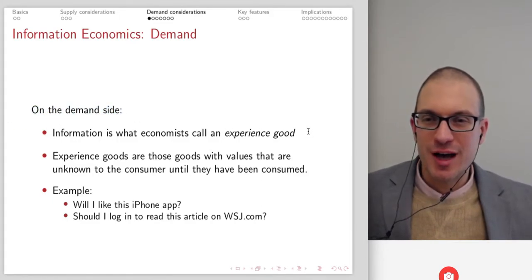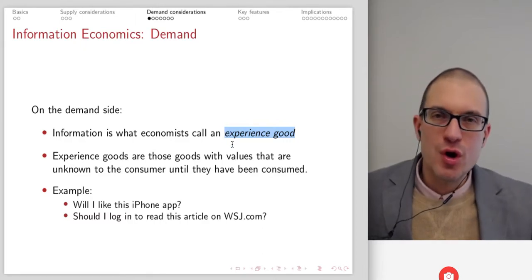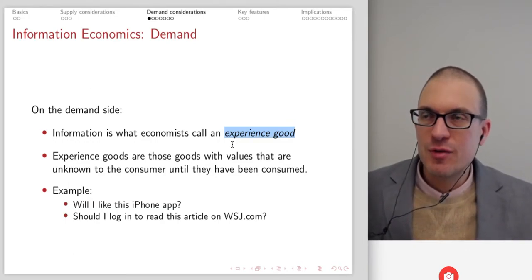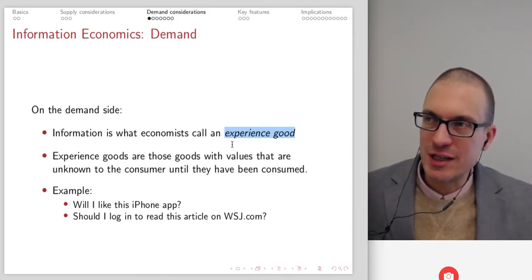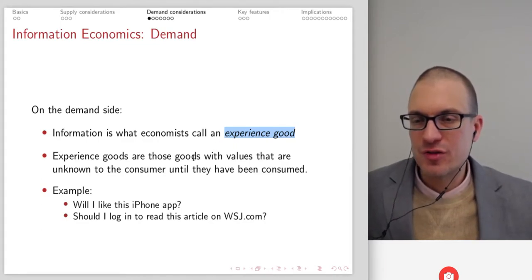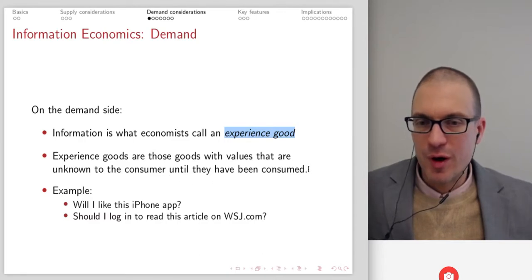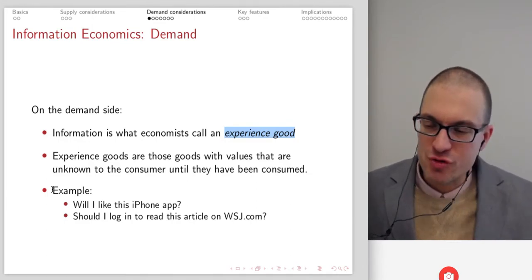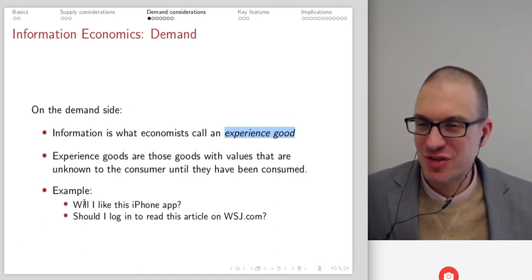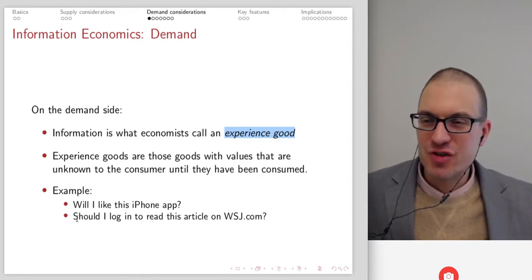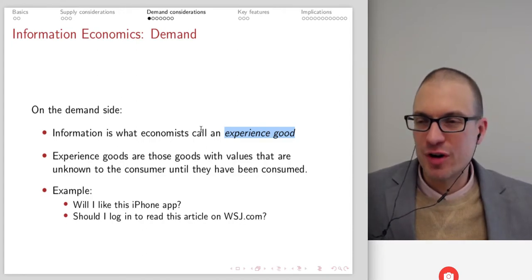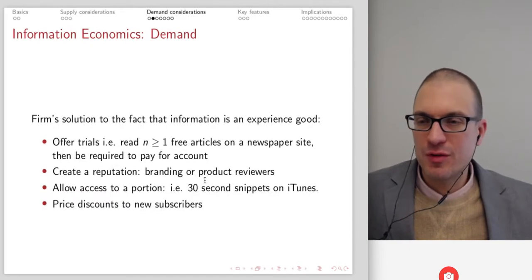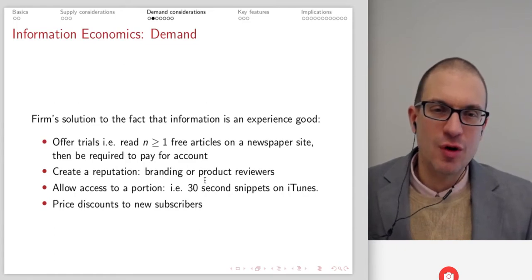On the demand side, information is what economists call an experience good — one where you don't know about the true value until after it's been consumed, though you can get a signal from other people. If there are people with usage patterns or taste sufficiently like your own, you can benefit from their reviews on Amazon or eBay to determine whether the benefit would be large relative to the opportunity cost of your time. Will I like this iPhone app? Should I read this article in the Wall Street Journal? You can only answer with some uncertainty from reviews — you ultimately don't know until you've done it yourself.